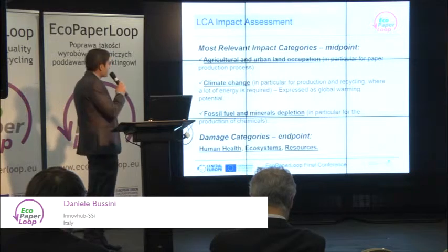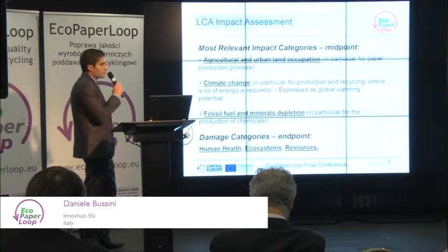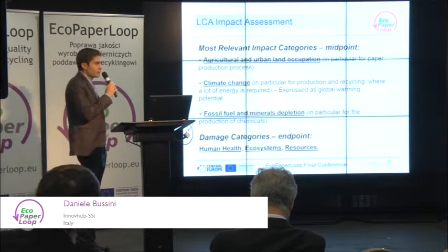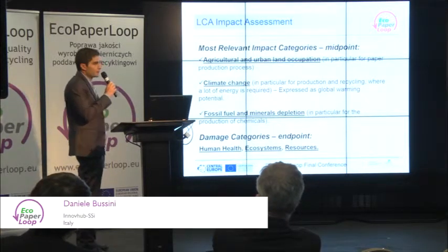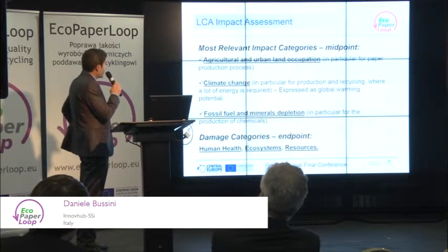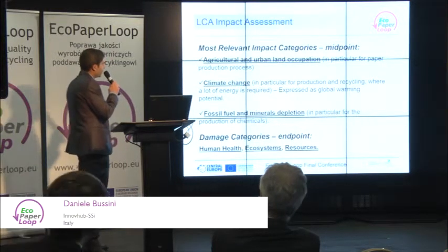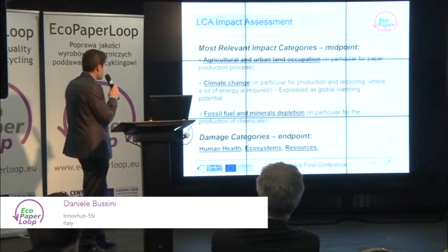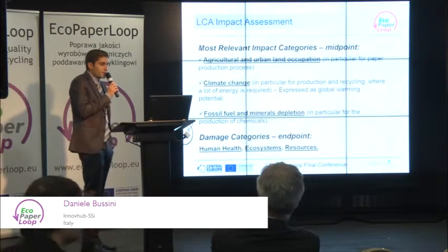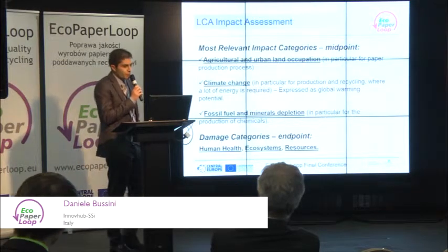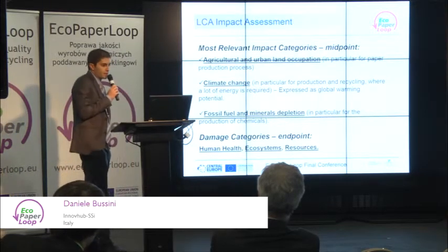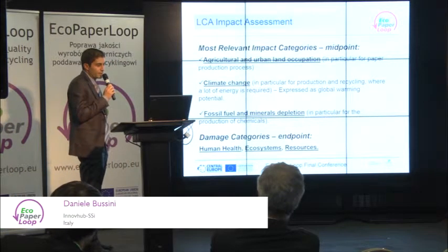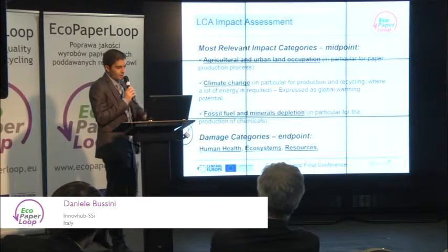The software is SimaPro 8.03 and the same ReCiPe impact assessment method. The most relevant impact categories are the same as for the packaging case — basically the impact categories more related to paper and pulp production: agricultural and urban land occupation, climate change, and fossil fuel and mineral depletion. In particular, this last category is associated with the production of chemicals used for de-inking. The endpoint damage categories are the same as evaluated in the previous study: human health, ecosystems, and resources.